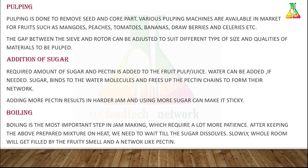Pulping is done to remove the seed and core parts. There are many mechanical pulpers available for fruits such as mangoes, peaches, tomatoes, bananas, strawberries, and celery. After pulping, sugar is added — the sugar used is invert sugar. More sugar results in a stickier jam. After sugar addition, pectin is added, which results in a harder jam.